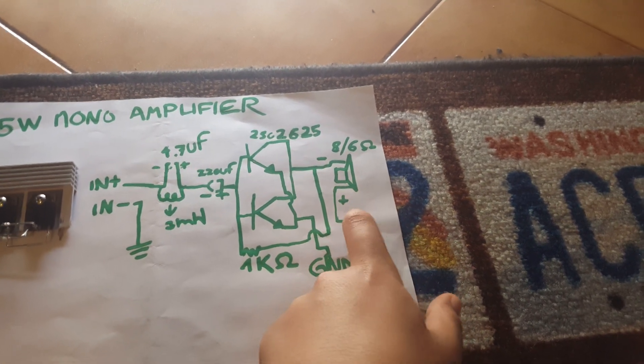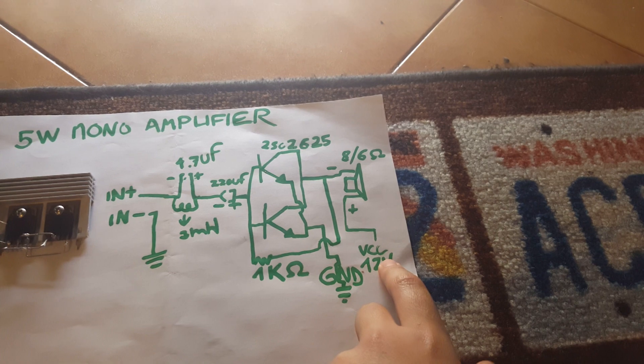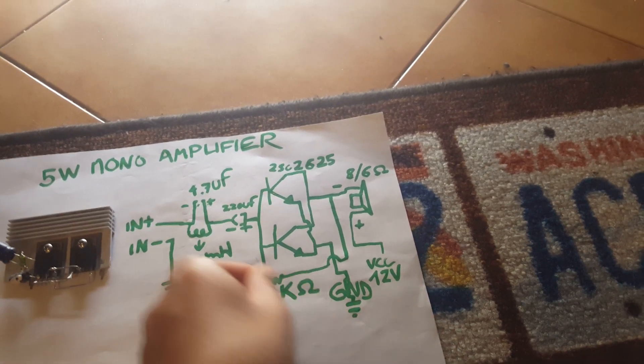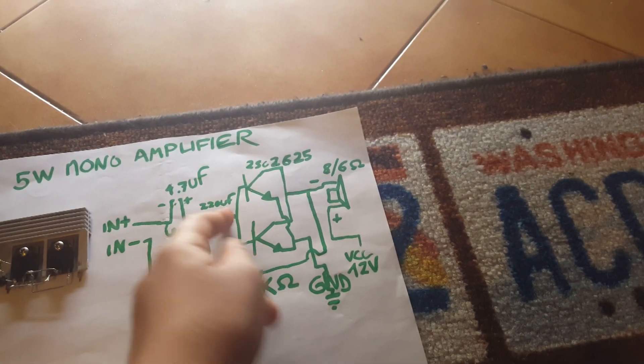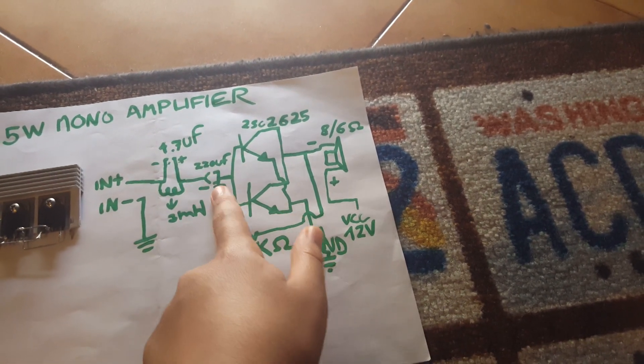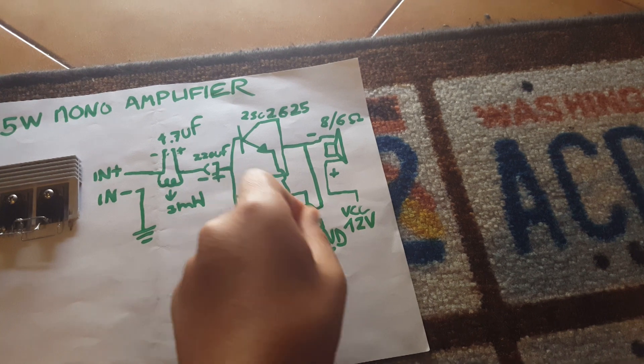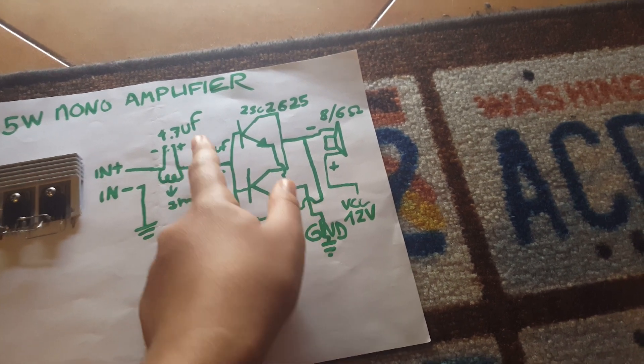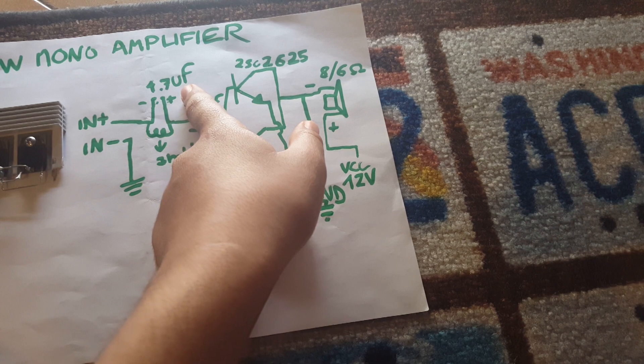The plus of the speaker goes to the VCC, 12V. Then, the bass of this transistor goes to 220uF. The plus goes to the bass and the minus goes to this filter, which is a 4.7uF capacitor.